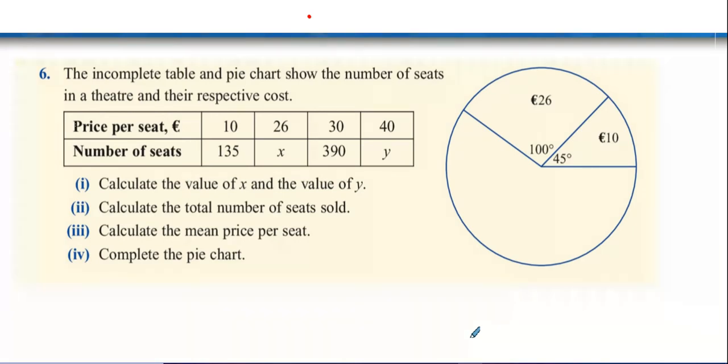The incomplete table and pie chart show the number of seats in a theatre and their respective costs. At 10 euro, there's 135 people who bought the 10 euro seats. 390 people bought the 30 euro seat, but we don't know how many bought the x and we don't know how many people bought the 26 euro seat and the 40 euro seat.